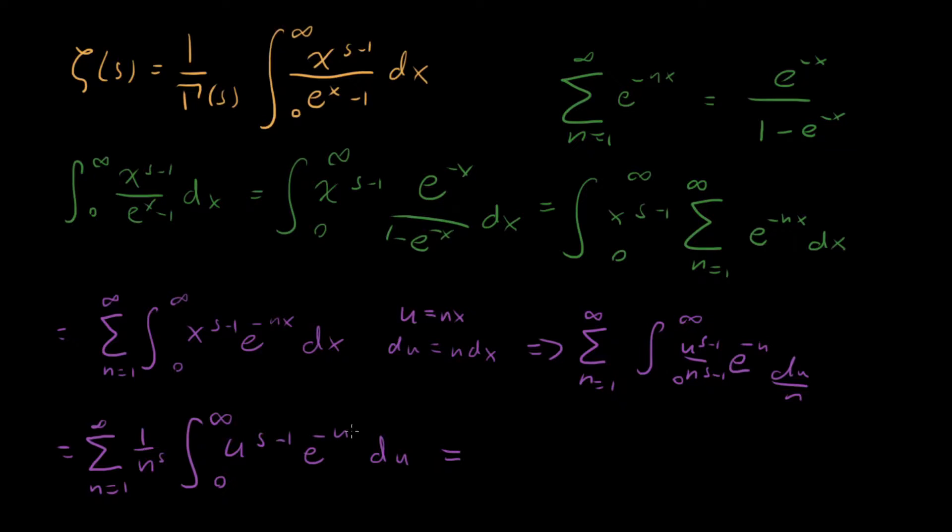And now we've actually done it. This right here is perfectly the series representation for the zeta function and the integral representation for the gamma function, and this gamma of s, as we can see. And it pulled out perfectly. You know, these two things aren't talking to each other. This sum is just in terms of n, which is out in front. And this integral is just in terms of u, which has nothing to do with the sum over there.